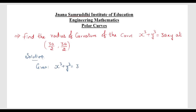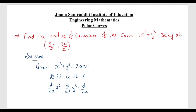The given curve is x³ + y³ = 3axy. First we need to differentiate this with respect to x. That is d/dx of x³ + d/dx of y³ = d/dx of 3axy, where 3a is constant, so we write it outside and apply d/dx of xy.